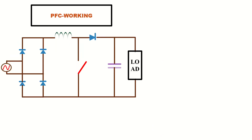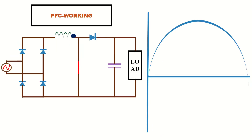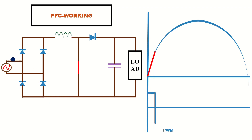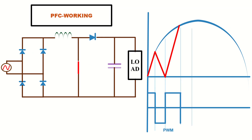When the switch is turned on, the inductor current starts increasing. When the current reaches the reference current, the switch is turned off and the inductor current starts decreasing. When the current reaches zero, the switch is turned on again and the inductor current starts increasing. This operation repeats for the entire cycle.